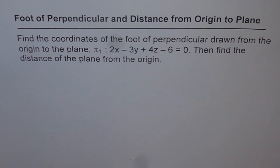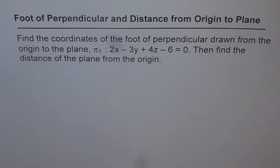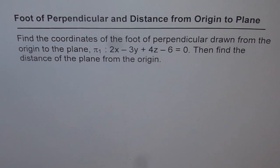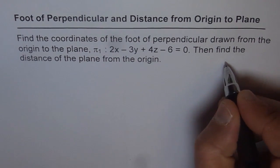This question is about finding the foot of perpendicular and distance from the origin to a plane. We need to find the coordinates of the foot of perpendicular drawn from the origin to the plane π₁: 2x - 3y + 4z - 6 = 0, and then find the distance of the plane from the origin.